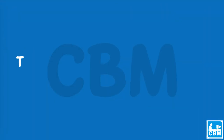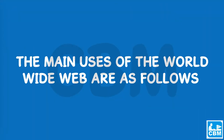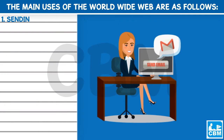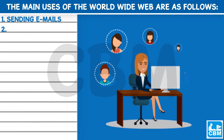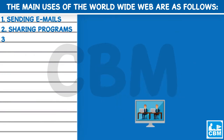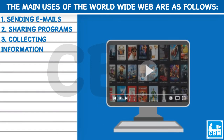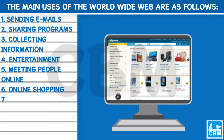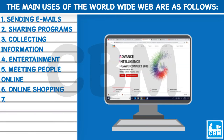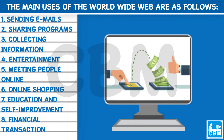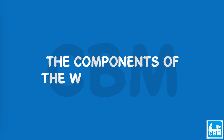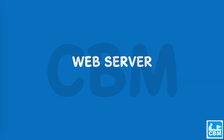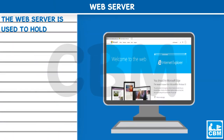The web provides the technology for publishing, sending, and obtaining information over the internet. The main uses of the World Wide Web are: 1. Sending emails. 2. Sharing programs. 3. Collecting information. 4. Entertainment. 5. Meeting people online. 6. Online shopping. 7. Education and self-improvement. 8. Financial transactions.